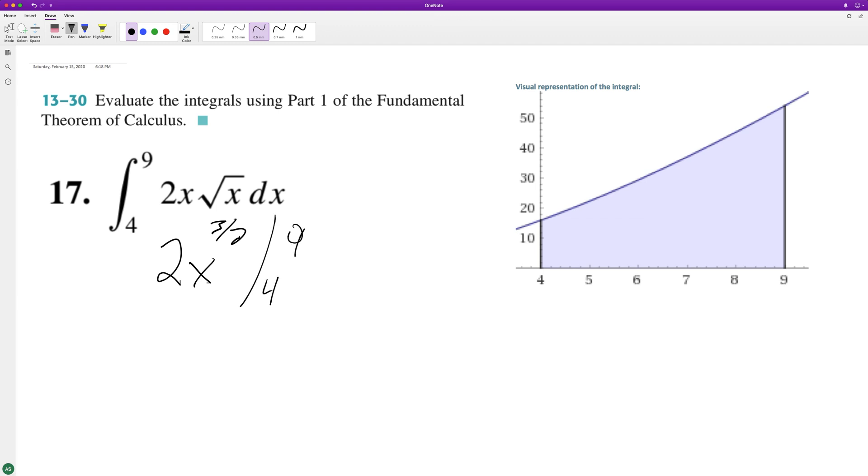So we're gonna take this from four to nine. And then what's gonna happen now, we can put the two out in front. X raised to the three halves, add one to it. So that's the same thing as five halves. So we're dividing by five over two.